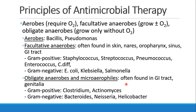We can also divide bacteria into aerobes versus anaerobes. Aerobes are bacteria that require oxygen to survive. Among anaerobes, we have facultative anaerobes, which can grow with or without oxygen, and then obligate anaerobes, which can only grow without oxygen. Aerobes would include bacillus or pseudomonas. Facultative anaerobes are often found in your skin, nares, oropharynx, sinuses, and GI tract, and they can be gram-positive or gram-negative. Obligate anaerobes and microaerophiles are often found in the GI tract and the genitalia, and they can also be gram-positive or gram-negative.